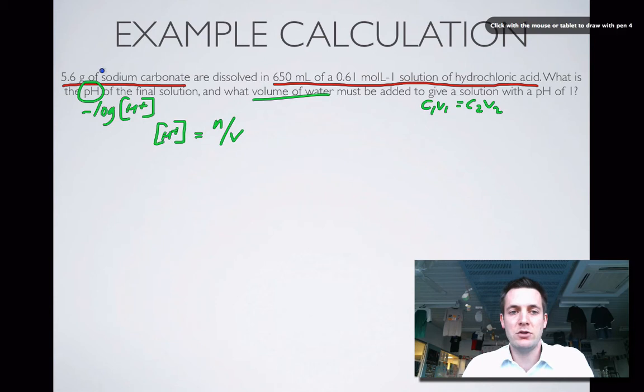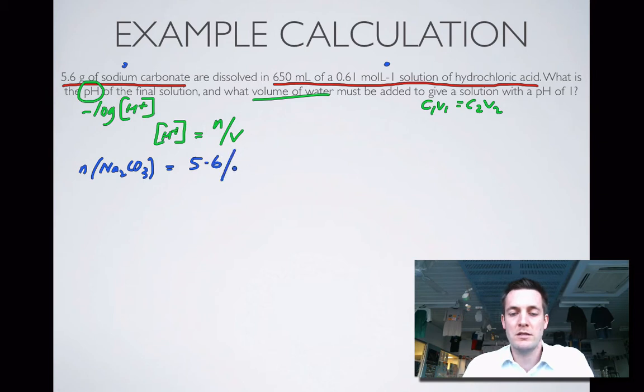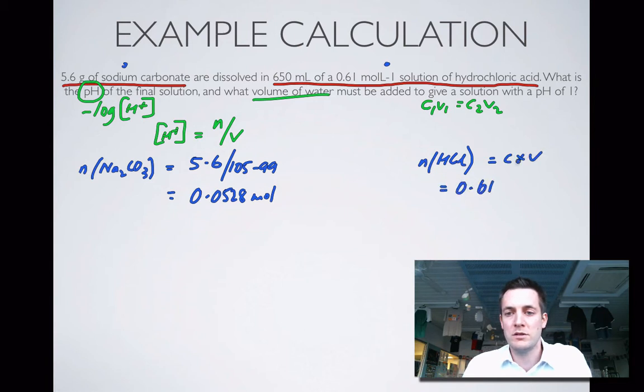I'm given information about two reactants here, the sodium carbonate and the hydrochloric acid. So normally that makes me think that might be a limiting reagent question. So let's find the number of moles of sodium carbonate first, Na2CO3. That equals 5.6 over the molar mass of Na2CO3, 105.99, and that equals 0.0528 moles. Let's find the number of moles of HCl. Number of moles of HCl, I'm given concentration and volume, so that equals C times V, and that's going to be 6.1 is the concentration, multiplied by 0.650 for the volume, and that equals 0.3965 moles.